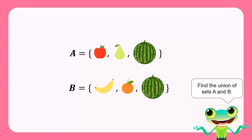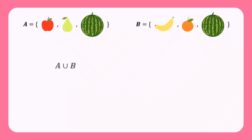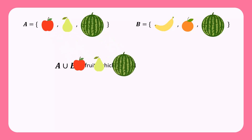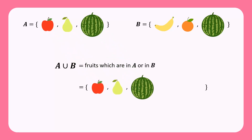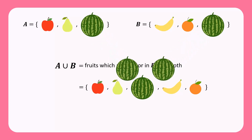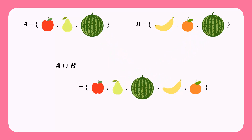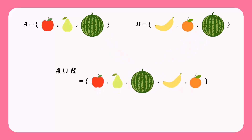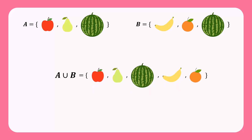Let's find the union of the sets A and B. A union B is a set consisting of all the fruits that are in set A, or in set B, or in both sets A and B. So A union B consists of apples, beers, watermelons, bananas, and oranges.